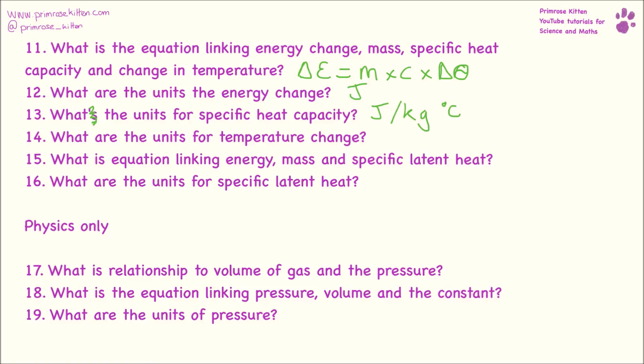The units for temperature change are degrees C. The equation linking energy, mass, and specific latent heat is: energy equals mass times specific latent heat. The units for specific latent heat are joules per kilogram.